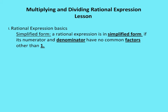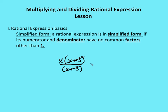Rational expression basics. We say that a rational expression is in simplified form if the rational expression has a numerator and denominator with no common factors other than 1. For example, x times x plus 3 over x plus 3 is not simplified because x plus 3 is a common factor. We reduce x plus 3 over x plus 3 to 1, giving us x times 1, or x, as the simplified form.